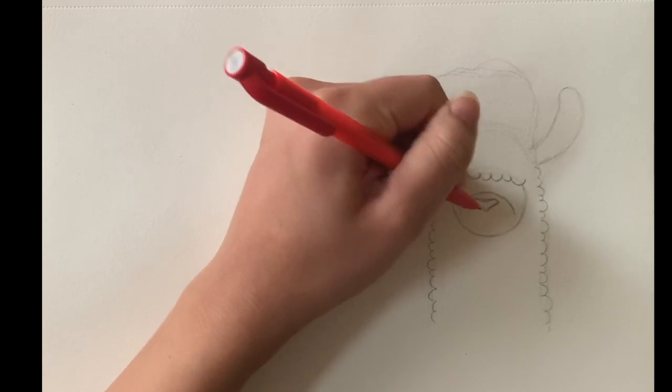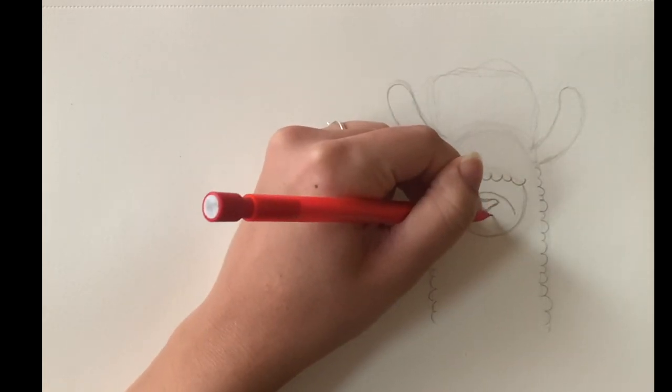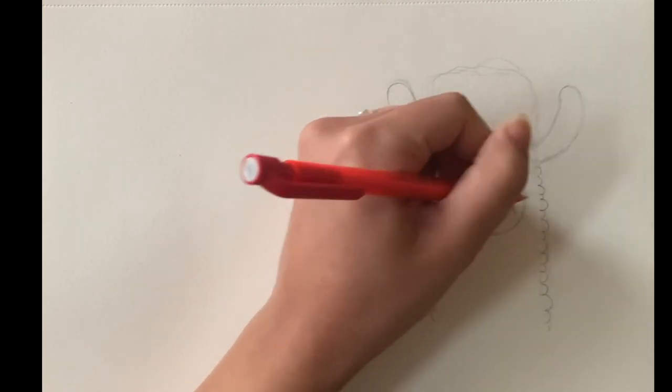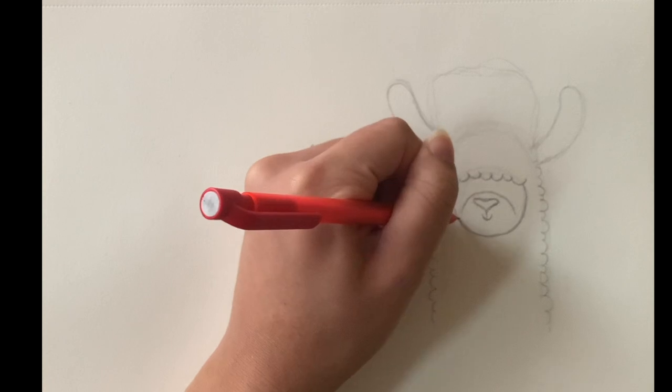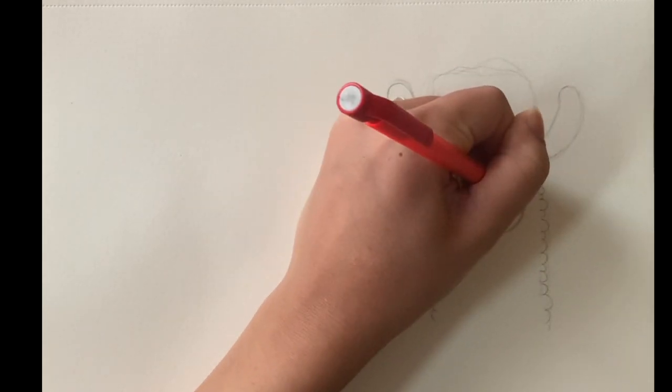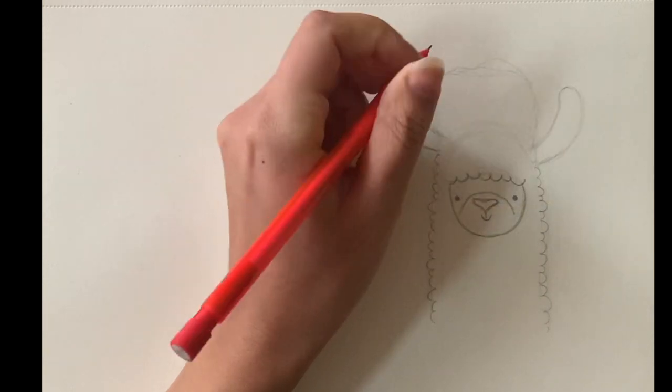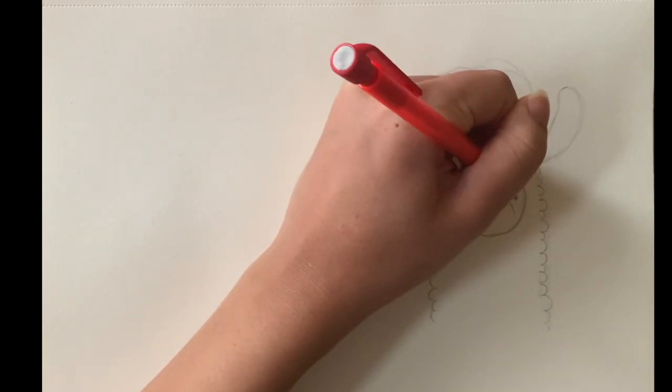Then I'm going to come down and give him his little smile. I'm just darkening that outline shape for his face, and I'm going to go ahead and give him two little eyes.